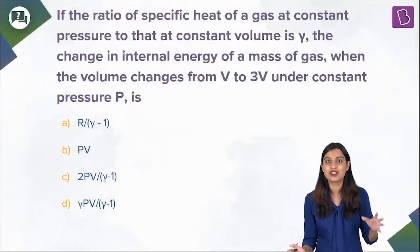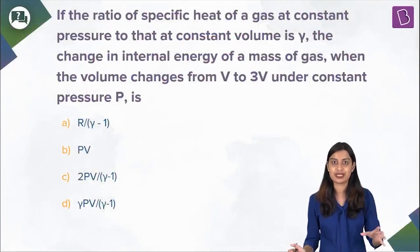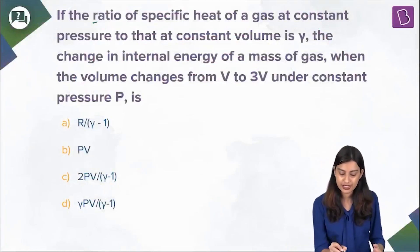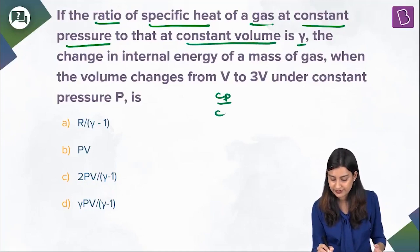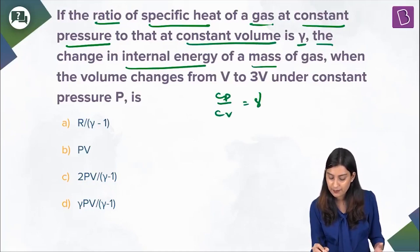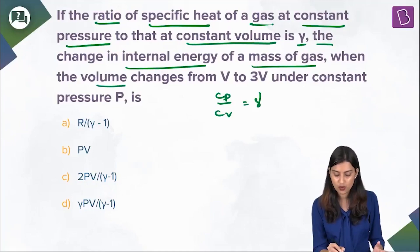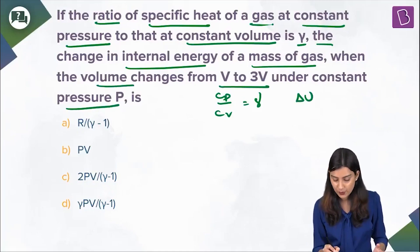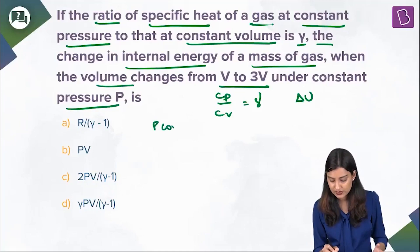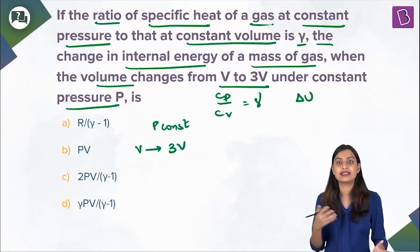We're discussing a numerical question from thermodynamics. If the ratio of specific heat of a gas at constant pressure to that at constant volume is gamma — Cp/Cv = γ — the change in internal energy of a mass of gas when the volume changes from v to 3v under constant pressure is what we need to find. So we need to find ΔU for the process where p is constant and volume increases to three times the initial value.